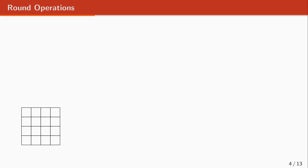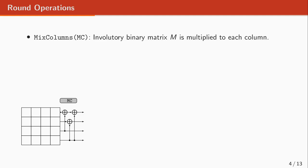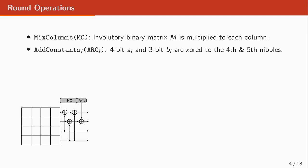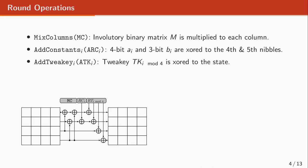In more detail, there are five operations in each round. Starting with an input state, the first operation is MixColumns, where a binary matrix is multiplied to each column. Then there is AddRoundConstants, where only a 4-bit and a 3-bit value are XORed to the fourth and fifth nibbles of the state. It is followed by AddRoundTweakKey, which depending on the round index XORs one of the four tweak keys to all of the state.